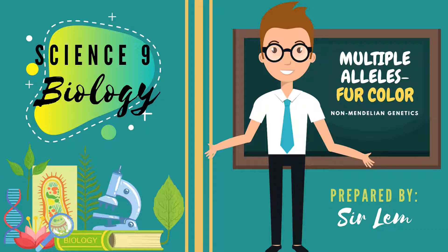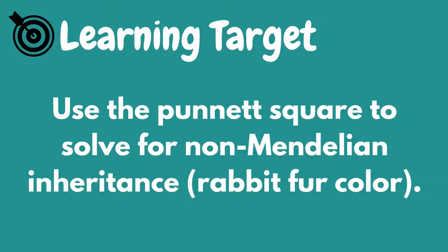For today's topic, we will discuss another example of multiple alleles which is the rabbit fur color. At the end of this video, viewers are expected to use the Punnett Square to solve for non-Mendelian inheritance.